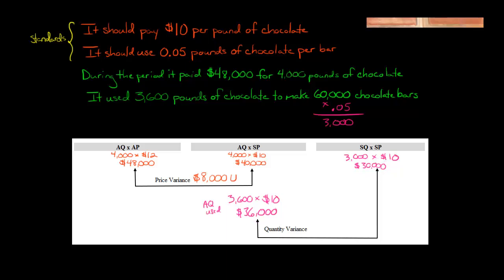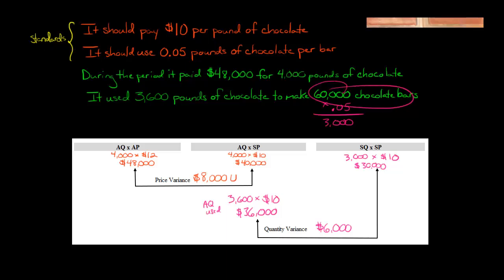We see there's a quantity variance of $6,000. Is that favorable or unfavorable? By company standards it was supposed to take 3,000 pounds of chocolate to make 60,000 chocolate bars, yet we actually used 3,600 pounds — 600 pounds more than standard. So this is an unfavorable quantity variance; we used more chocolate than we should have to make all these chocolate bars.